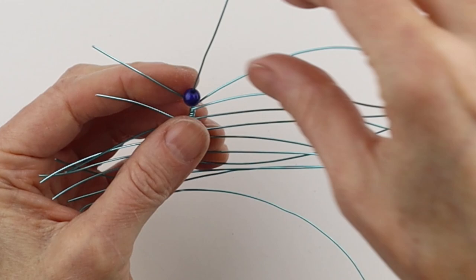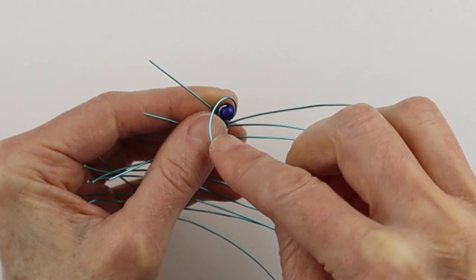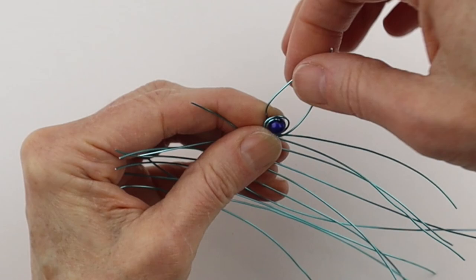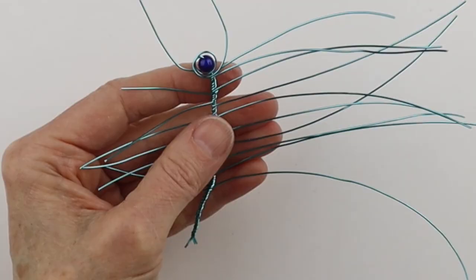So we'll put on the six millimeter miracle bead and we just want to wind it around a few times. You could do two or three times and then we want this one to go on that side and that one to kind of go on that side.